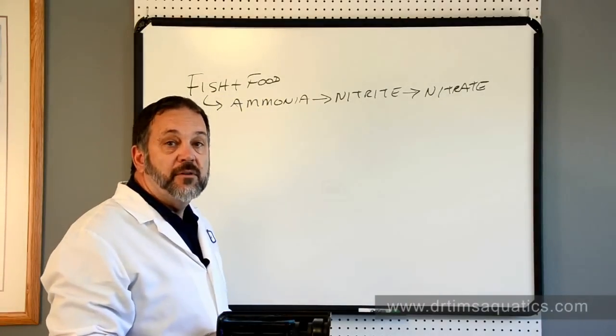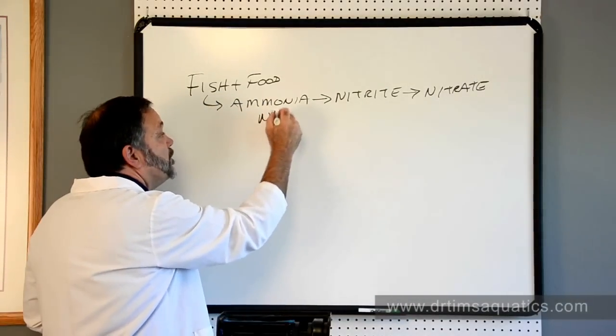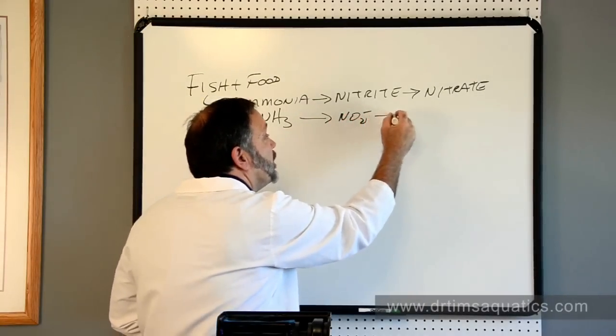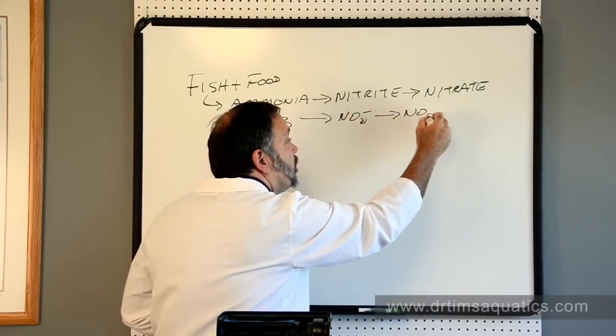Let's put some chemical formulas there just so you understand. So ammonia is NH3, it goes to NO2 minus, and then that goes to NO3.